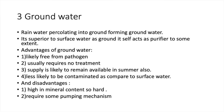Groundwater — rainwater percolating into the ground constitutes groundwater. Groundwater is the cheapest and most practical means of providing water to small communities, and is superior to surface water because the ground itself provides an effective filtering medium. Advantages: it is likely to be free from pathogenic agents, usually requires no treatment, the supply is likely to be certain even during dry season, and it is less subject to contamination than surface water. Disadvantages: it is high in mineral content like salts of calcium and magnesium which render the water hard, and it requires pumping to lift water.